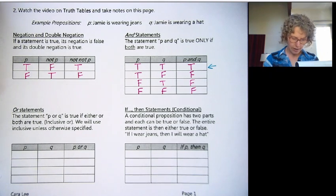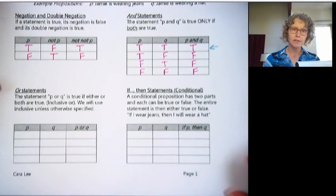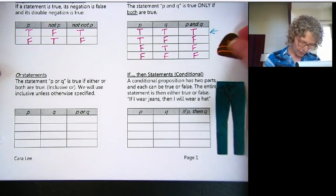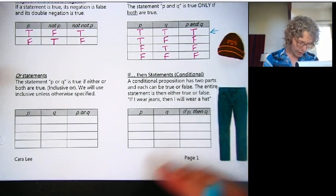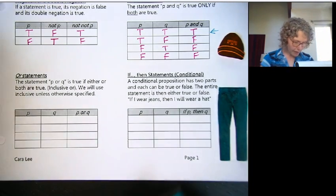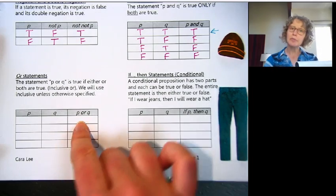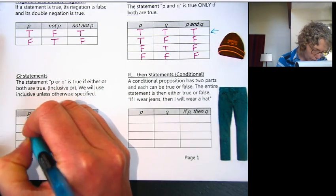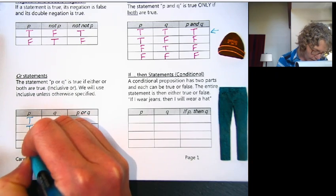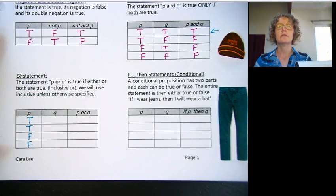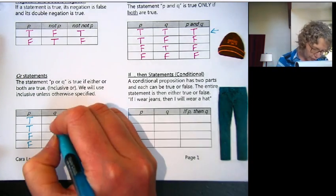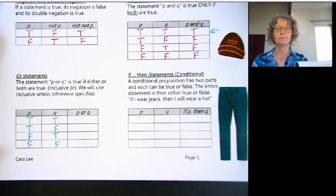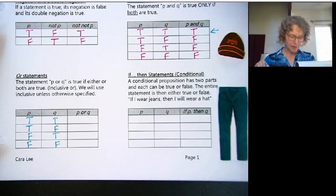Let's look at OR. Get our jeans and hat back. OR statement. So again we have P and Q because we're going to look at P OR Q. We'll set this up with the first two true, second two false. And then we'll alternate: true, false, true, false. All four possibilities.